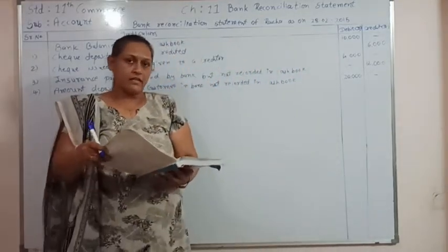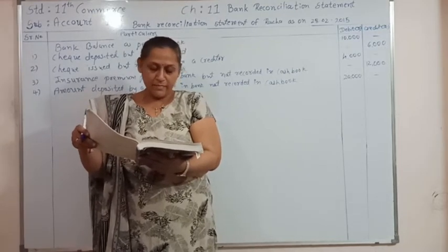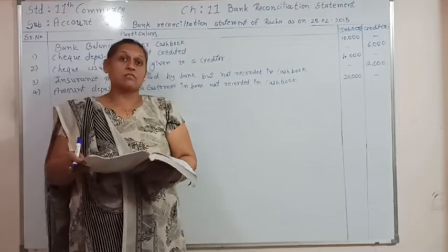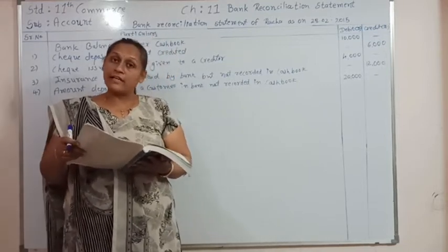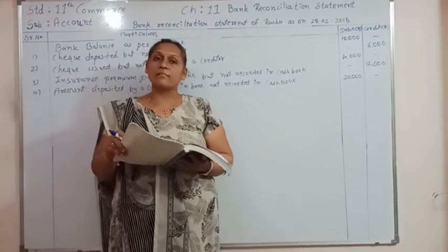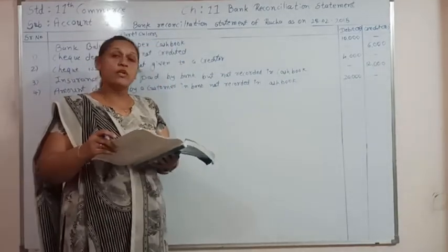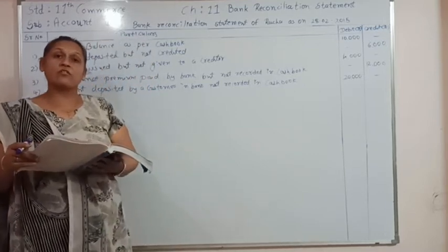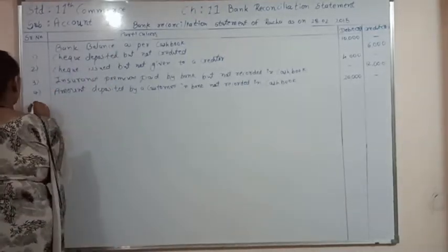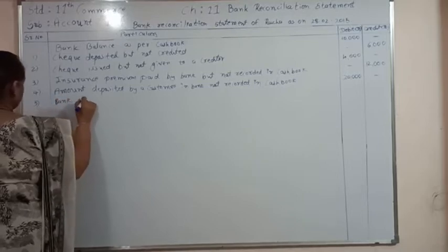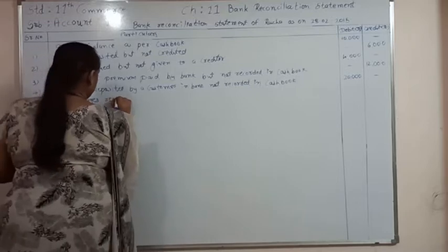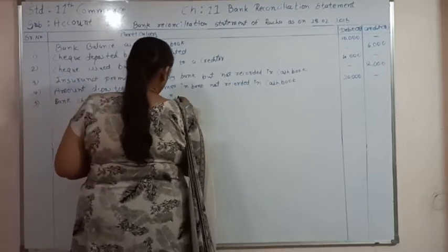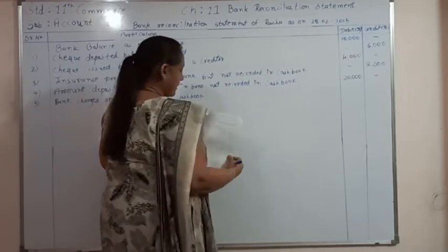Transaction number 5: bank charges of ₹100 recorded by bank are recorded twice in the cash book. Bank charges are supposed to be credited once in the cash book but they have been credited twice. So if we debit once in the bank reconciliation statement, that will correct it. Entry 5: bank charges recorded twice in cash book — ₹100, debited in BRS.